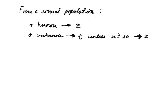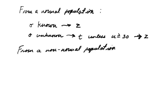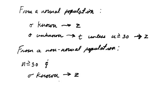From a normal population: if sigma is known, use Z. If sigma is unknown, use T, unless n is greater than or equal to 30, then use Z. If you are sampling from a non-normal population, if n is greater than or equal to 30 and sigma is known, use Z. If n is greater than or equal to 30 and sigma is unknown, you can use Z.